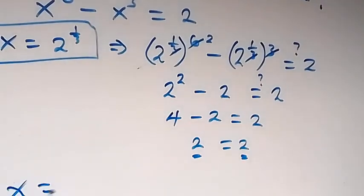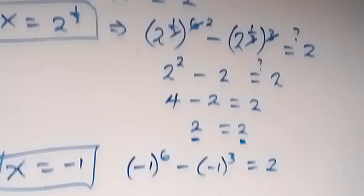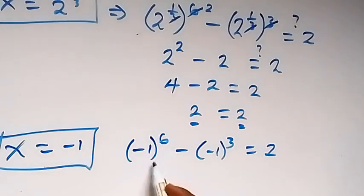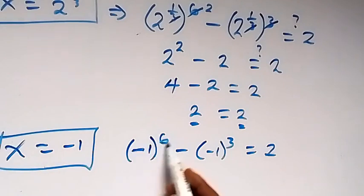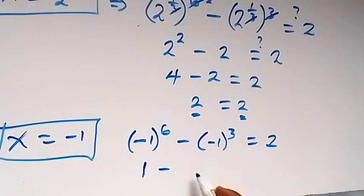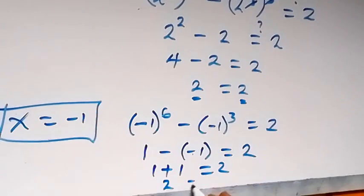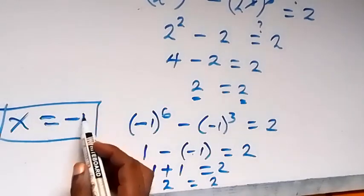For x equals to minus 1, when we substitute, we have minus 1 raised to power 6, minus minus 1 raised to power 3. Minus 1 raised to power 6 will be plus 1, because a negative number raised to an even power is positive. So this is 1. Then minus: minus 1 raised to power 3 is minus 1. So that's minus minus 1, which gives plus 1. Then 1 plus 1 equals 2, which is equal to 2. So the left hand side equals the right hand side, and x equals to minus 1 also satisfies the given problem.